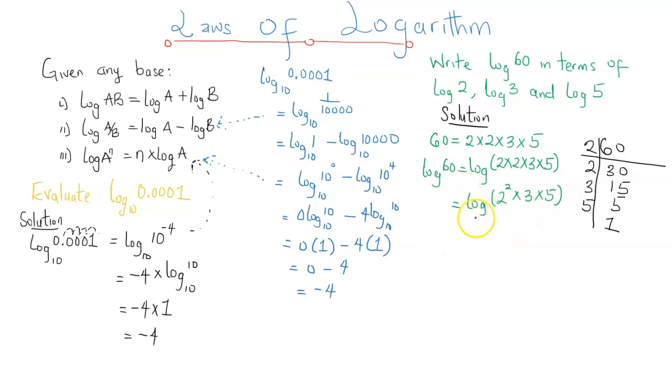Now we can see that this is the log of a product. So the first law is going to help us resolve this. And we are going to have log 2 squared plus log 3 plus log 5. This law extends beyond 2 items. We can have a, b, c, d, and it's still going to be equal to log a plus log b plus log c plus log d.